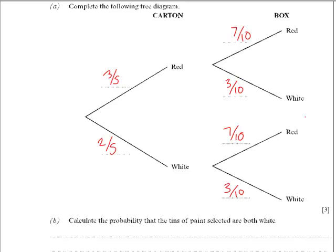In part B you are asked to calculate the probability that the tins of paint are both white. You can see that white followed by white is this row along the tree diagram.